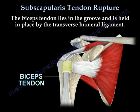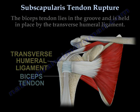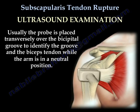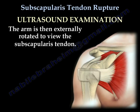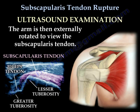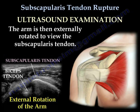The biceps tendon lies in the groove and is held in place by the transverse humeral ligament. For ultrasound examination, the probe is placed transversely over the bicipital groove to identify the groove and the biceps tendon while the arm is in a neutral position. The arm is then externally rotated to view the subscapularis tendon.